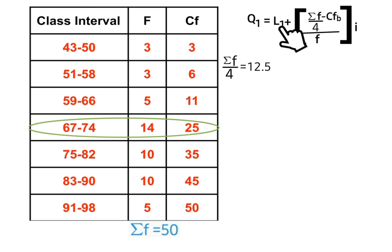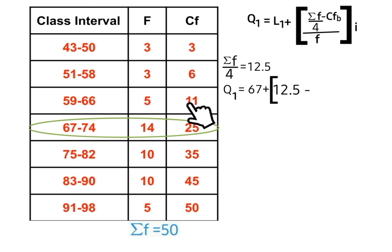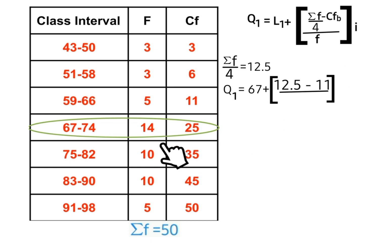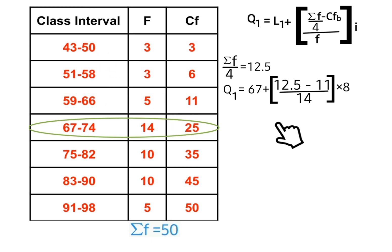So L1, the lower class limit of the first quartile class, is 67. We have: summation f over 4 is 12.5, minus the cumulative frequency before the first quartile class — that is 11 — over the frequency of the first quartile class, times the class width. We get the class width by subtracting: 58 minus 50 gives us 8.